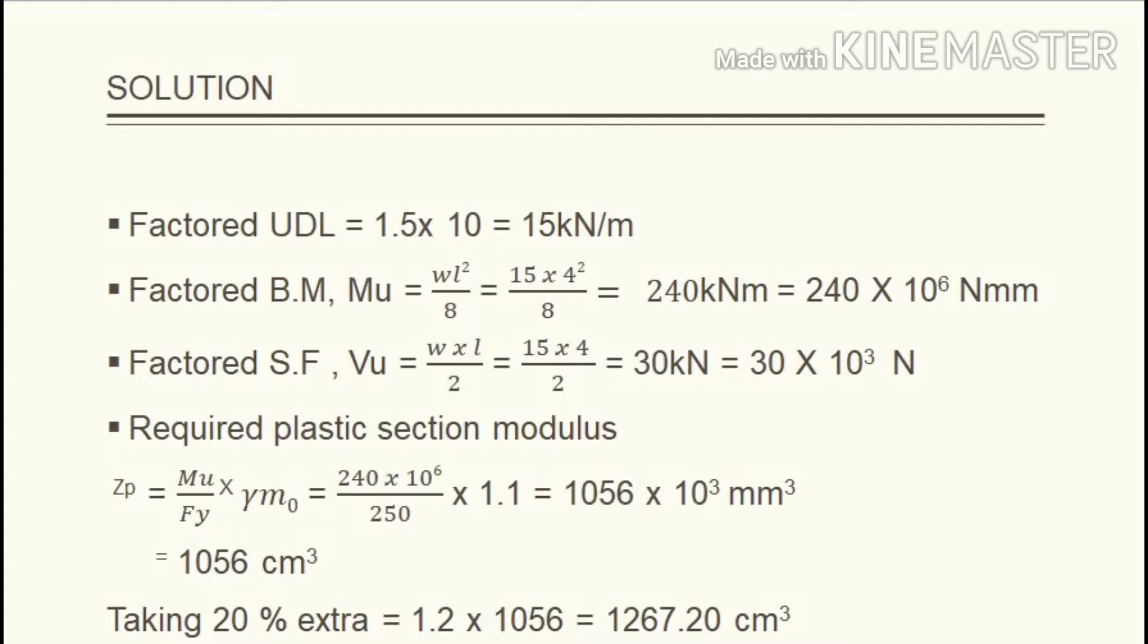Next is factored shear force Vu equals WL by 2. 15 times 4 by 2 equals 30 kilonewton, or 30 times 10 raised to 3 newton. Next is required plastic section modulus Zp equals Mu by Fy times gamma M0. Mu is the factored bending moment 240 times 10 raised to 6, and Fy is the yield stress 250. Gamma M0 is 1.1 from IS 800 table 5 for compression members. This equals 1056 times 10 raised to 3 mm cube, or 1056 centimeter cube. Taking 20 percent extra, 1.2 times 1056 equals 1267.20 centimeter cube.